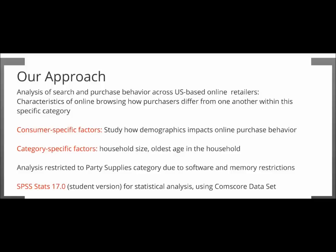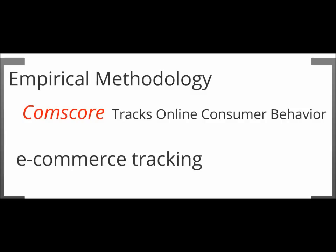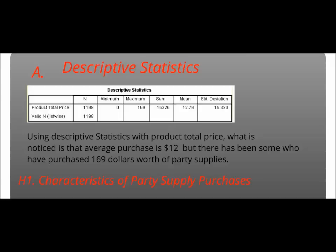For hypothesis one, it would be the characteristics of party supply purchases. I guessed the average purchase price — the product total price — would have been $20, disregarding discounts. Using descriptive statistics with the product total price, you can see that it's $12.79. You can also notice that the maximum purchase was $168.99. I'm not sure who would necessarily spend $169, but you never know.